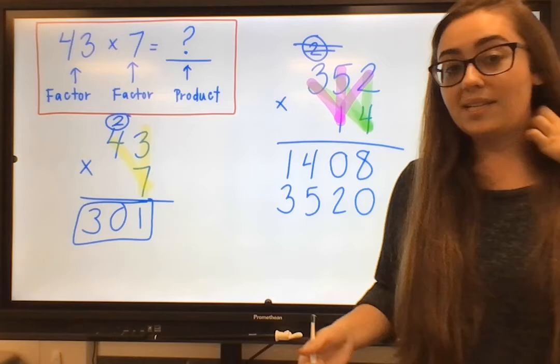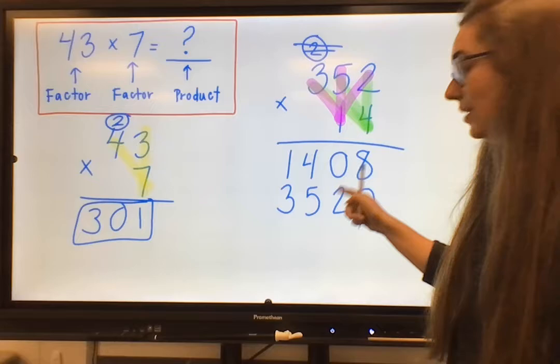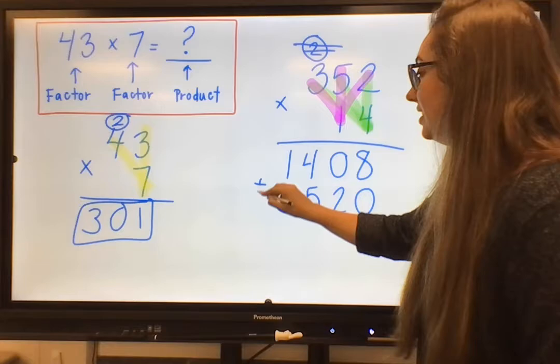Now you have two different numbers here, which we would call our partial products. The reason that we call them partial products is because they are two parts of the full product. So once we add these together, we will get our final results, that product of our answer.